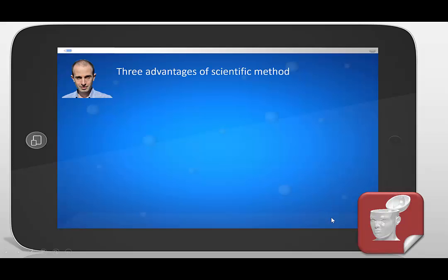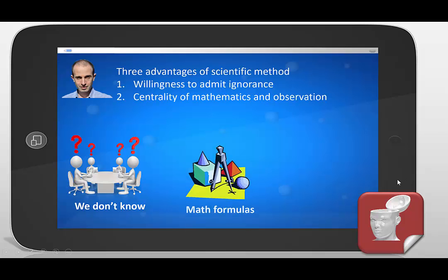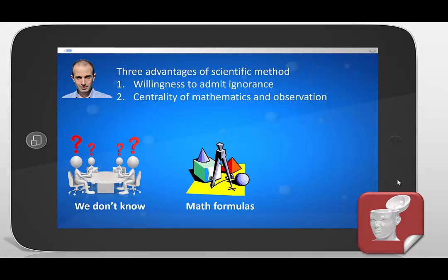With regards to ignorance, Harari looks at the scientific method and says there are basically three advantages. One is willingness to admit ignorance. Once we became willing to admit ignorance, we didn't have to go ask the local priest how to explain something — we admitted ignorance, but that also means we believe we can solve it. The second is the centrality of mathematics and observation, so mathematical formulas and observation become very important in the actual resolution of problems.